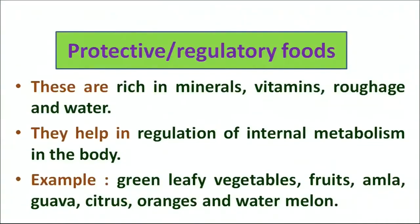Another category is protective or regulatory foods. This includes vitamins, minerals, water and roughage. The basic purpose of this category is to protect our body from different infections and to regulate the internal metabolism in the body. Examples are fruits, green leafy vegetables, amla, watermelon, orange and citrus fruits.